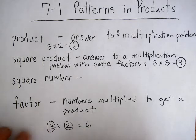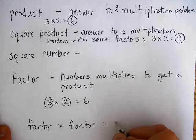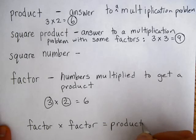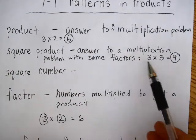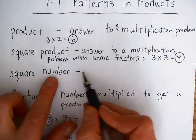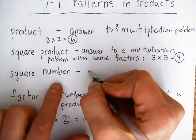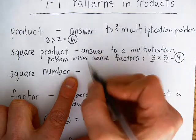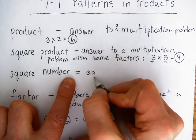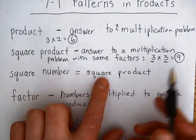In multiplication, we have factor times factor equals product. In the case of the square product, the factors are going to be the same number. The square number is basically the same thing as a square product — all square products are going to be square numbers.